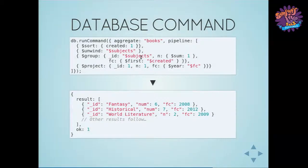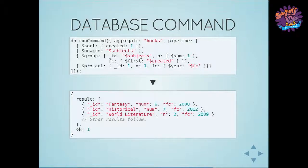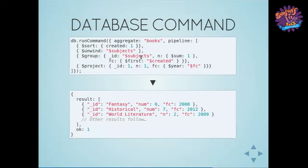With the database command, it's slightly more verbose because commands run on the database — you specify aggregate and give it the collection name, but the pipeline argument is exactly the same as the argument to the helper method. This visualizes what I said about the document limit — when we run commands we get this single document back. All of our results come back in a result field, and you want to check that the okay value is one before working with the result.